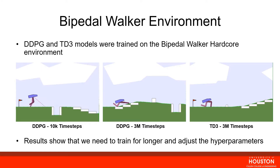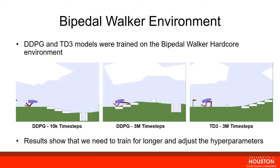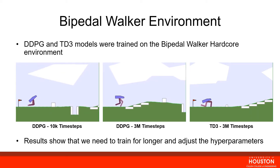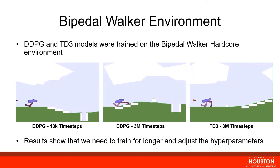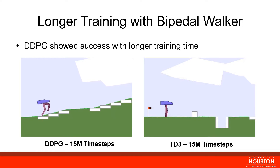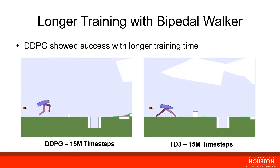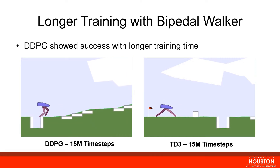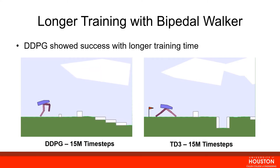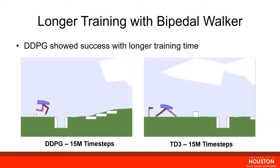We have results from both DDPG and TD3. At 10k time steps, at 3 million for DDPG, and TD3 at another 3 million. At only 3 million, TD3 is stuck at a local optimum and just kneels over. By further increasing training time, DDPG is able to move much further in the environment, while TD3 is still stuck at the initial area and isn't able to progress much further.